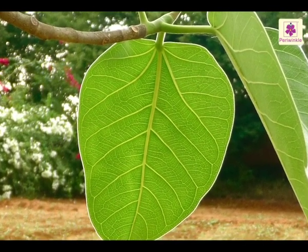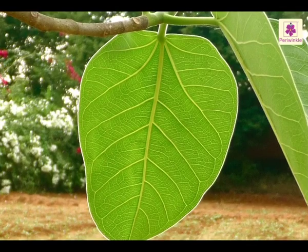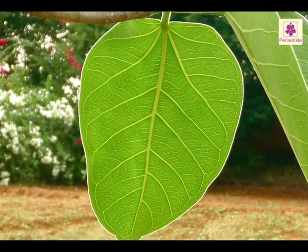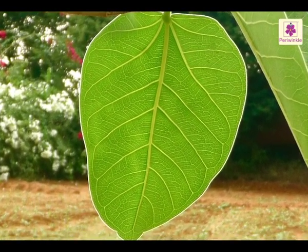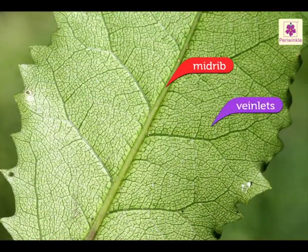The leaves are flat and thin so they can trap as much sunlight as possible. If they were thick, all the cells wouldn't be able to get much sunlight or carbon dioxide, but they would still need to have food. The midrib and veinlets keep the leaf firm and exposed to the sun.